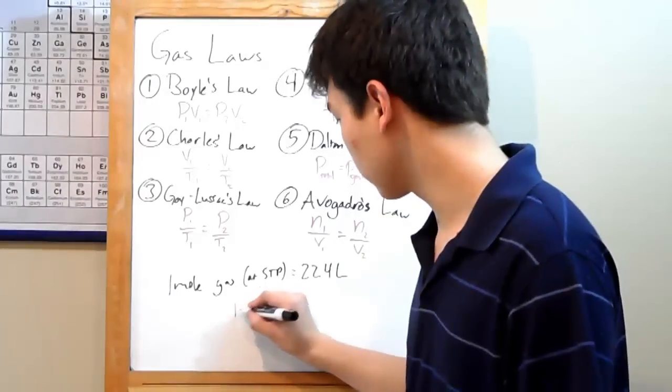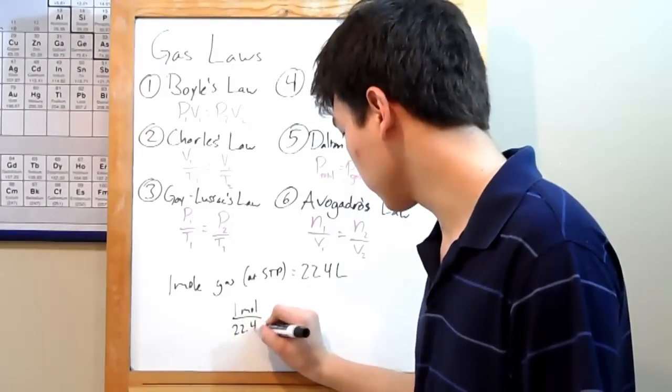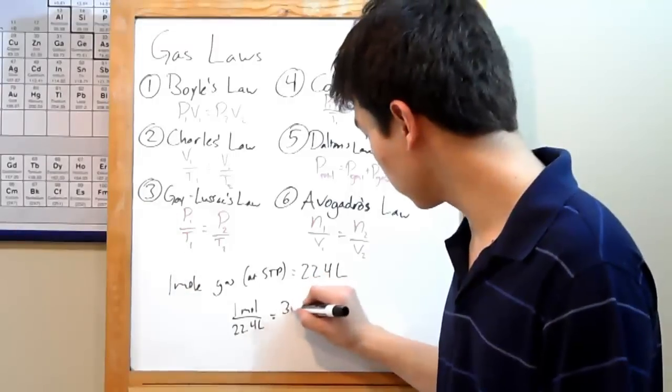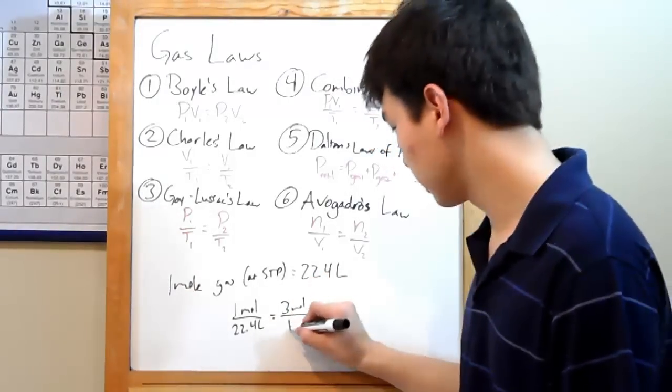You know that you start out with a mole, N1, and a volume of 22.4 liters, V1. You know that you've added two more moles for a total of three moles, N2, and you've got an unknown V2.